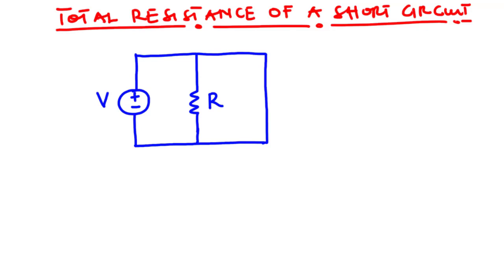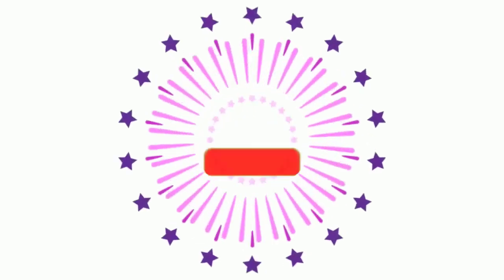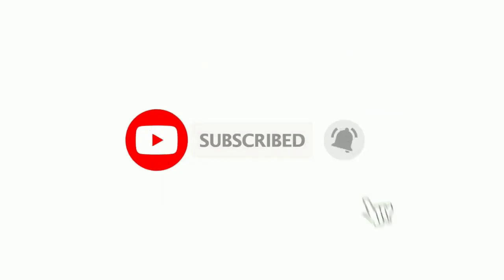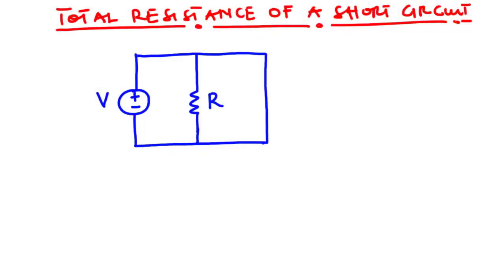Hello everyone, welcome back to this channel. In today's video we are going to discuss a very important concept in network analysis called short circuit. We are going to learn how to find the total resistance of a short circuit. We are going to solve a lot of examples so that at the end of the video you will be able to find the total resistance of a circuit with one or more resistors being short-circuited.